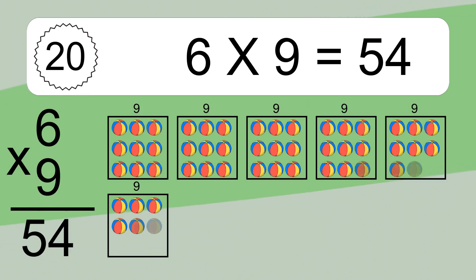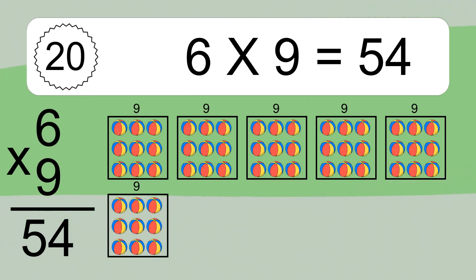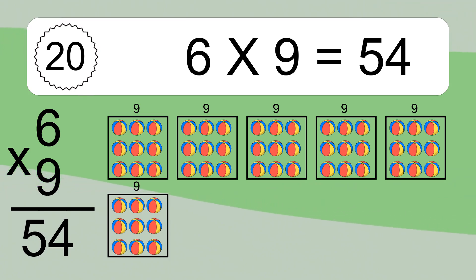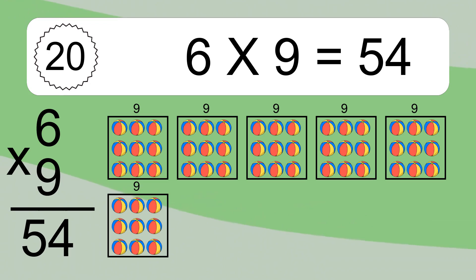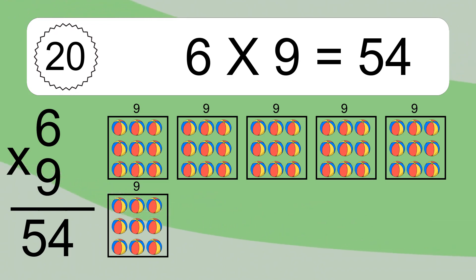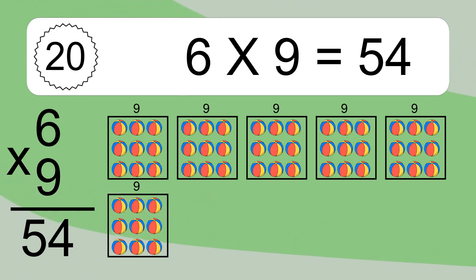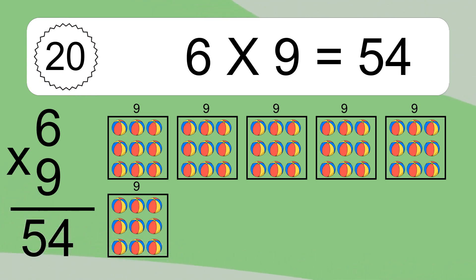Six times nine equals 54. We have six boxes and each box has nine colorful balls inside. If you count all the boxes together, you will have six times nine balls. This equals 54 balls.